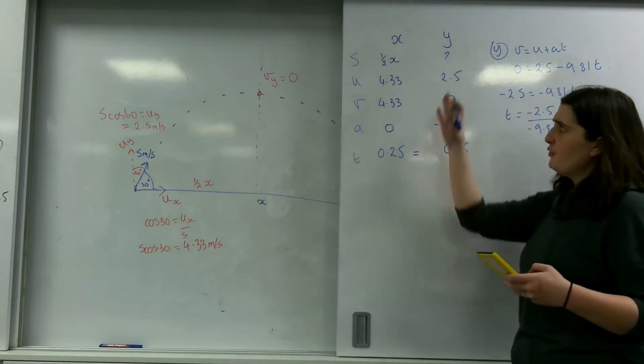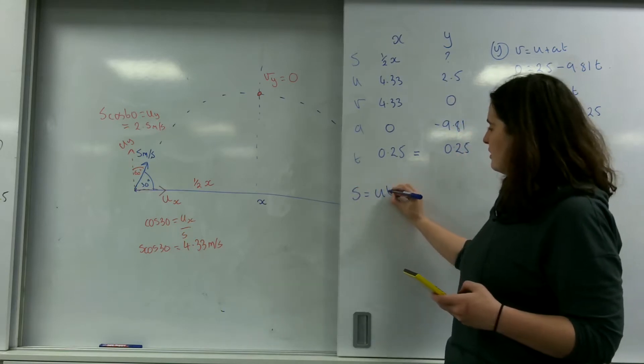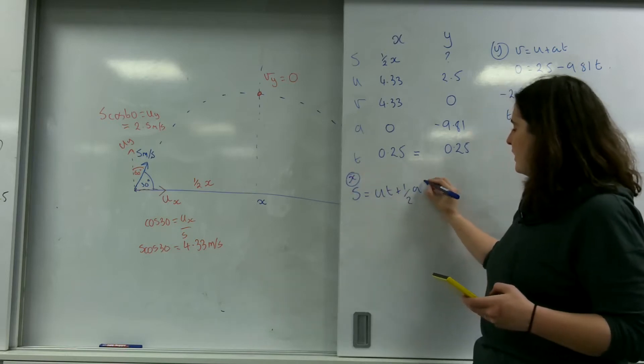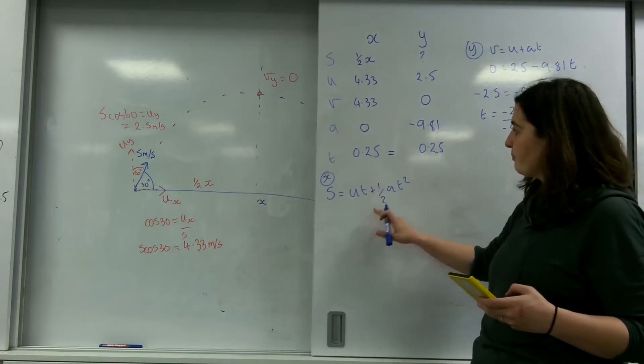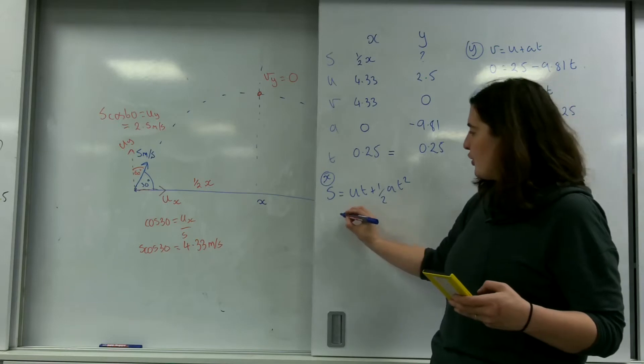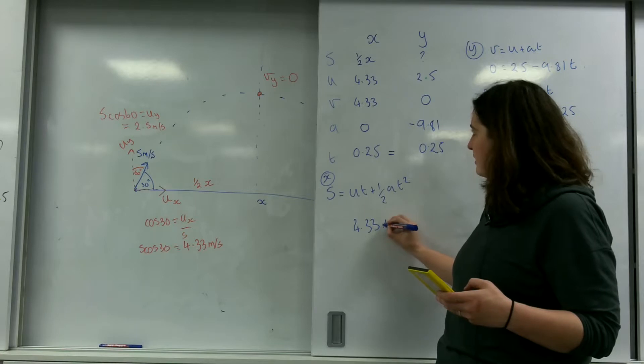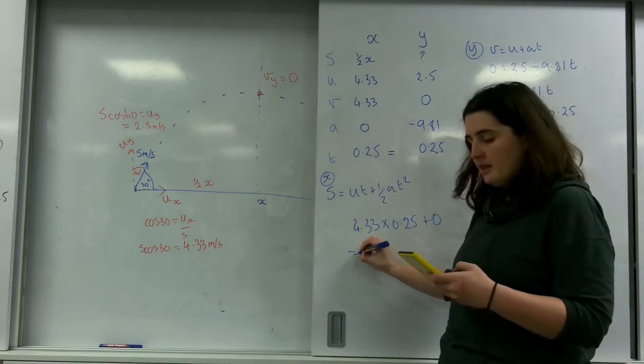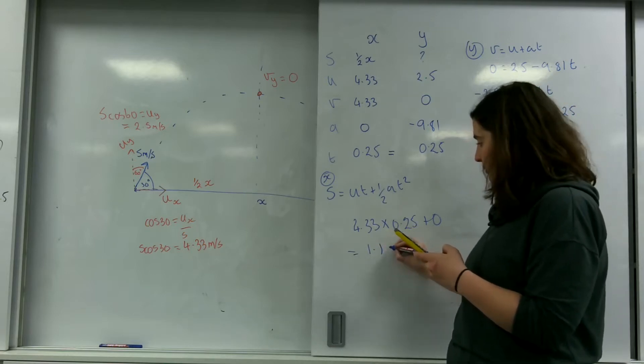I'm now going to find my S here. S equals U, T plus a half. I'm going to do this in the x direction. Half A, T squared. And my A being 0 completely destroys that and wipes it out. So I've got 4.33 times by 0.25 plus 0, so times by 4.33 is 1.1 metres.